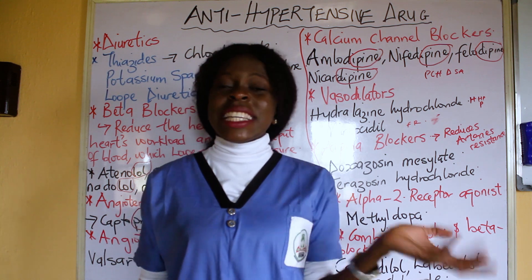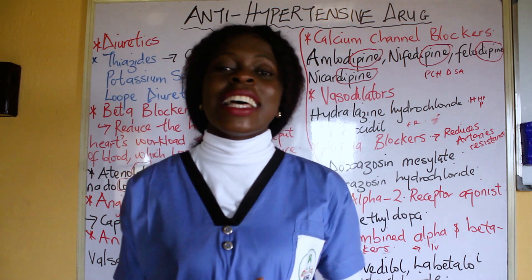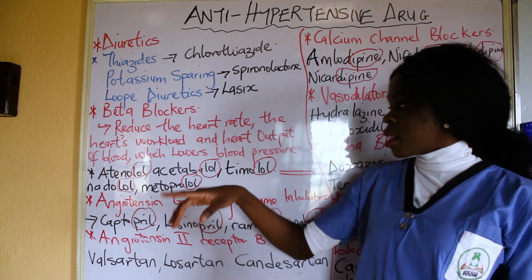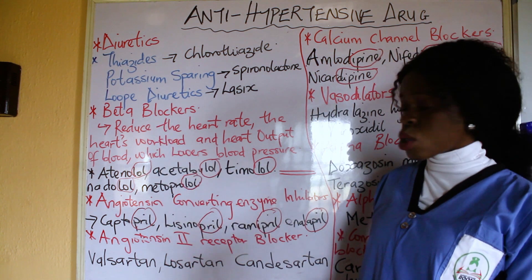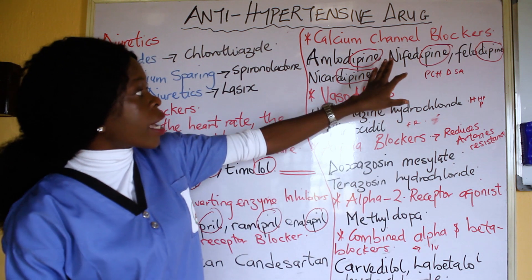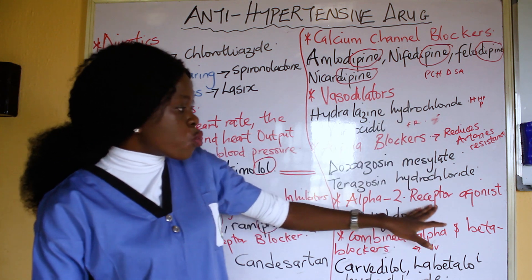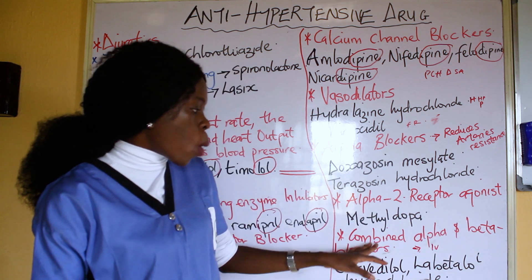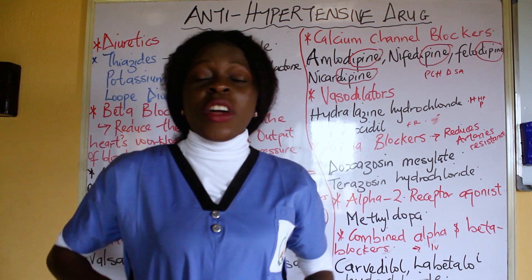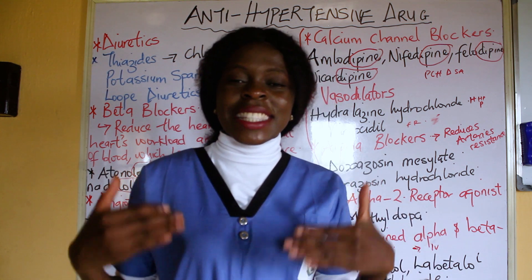So these are the various classes and types of antihypertensive drugs. To recap: the diuretics, the beta blockers, the angiotensin-converting enzyme inhibitors, the angiotensin-2 receptor blockers, the calcium channel blockers, the vasodilators, the alpha blockers, the alpha-2 receptor agonists, and the combined alpha and beta blockers. Thank you very much for watching. Don't forget to like and drop your questions and comments in the comment section.